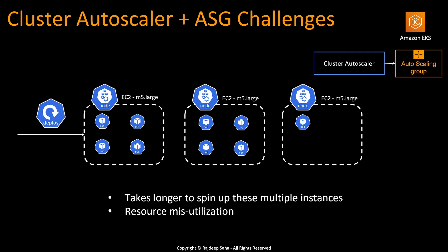So what are some of the challenges with this? Number one: since cluster autoscaler with autoscaling group is provisioning multiple EC2s, it takes longer to spin up those instances. Number two: there is resource misutilization — the last EC2 is only running one pod, so most of the CPU and memory is being wasted.